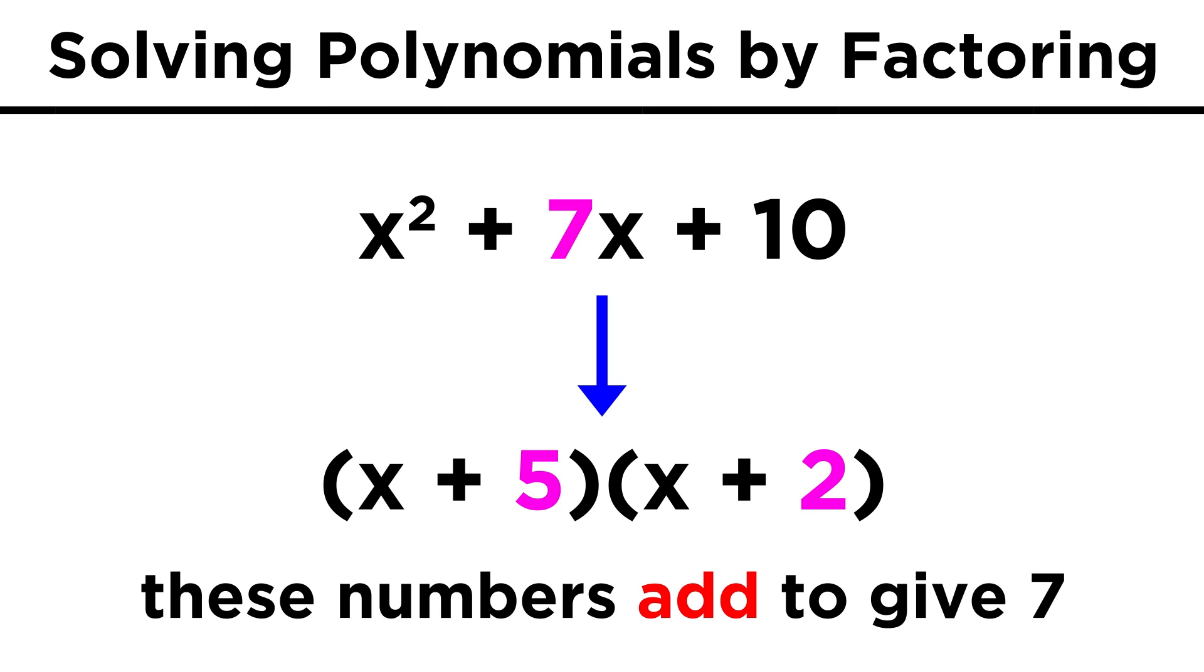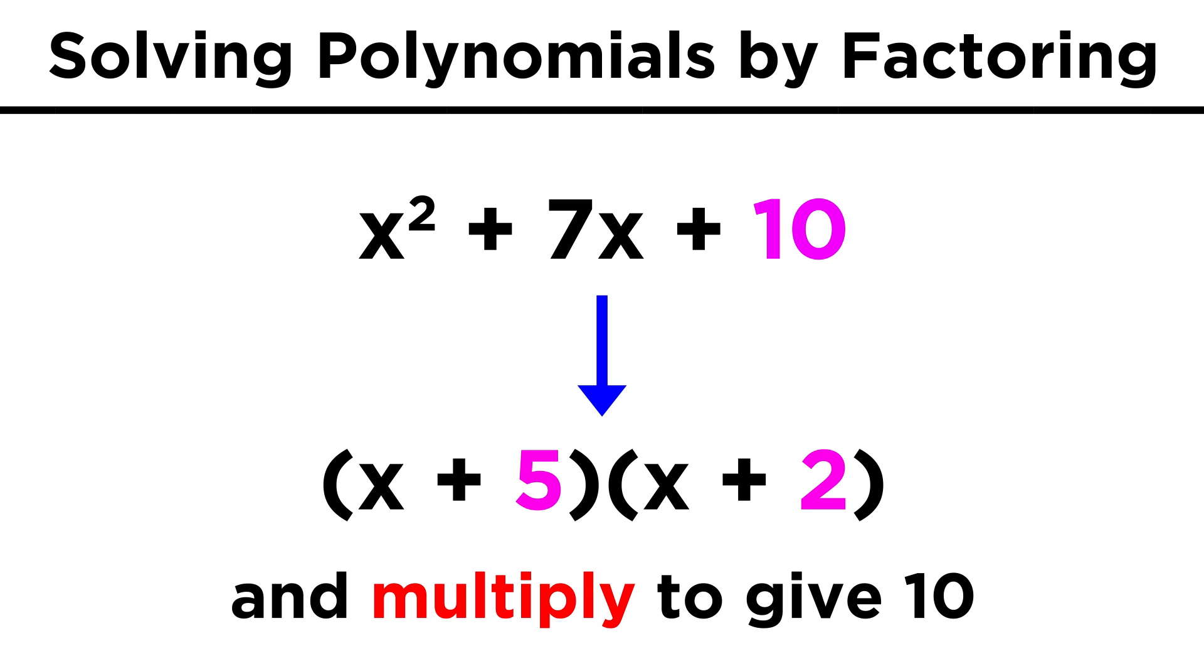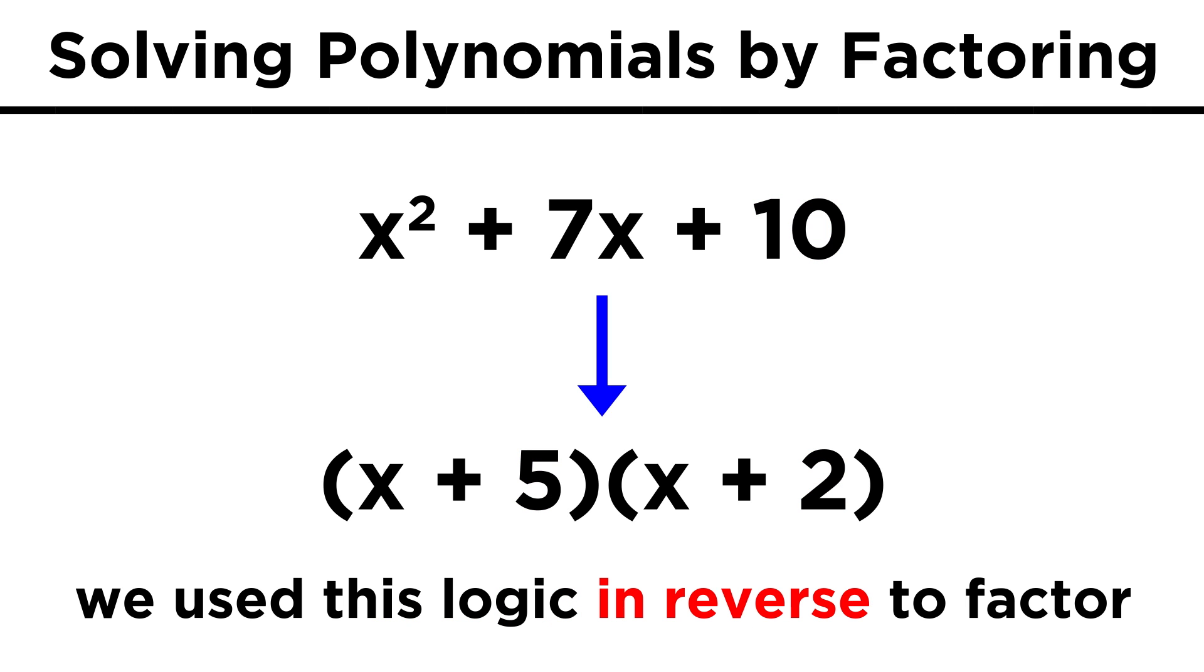Notice that we add five and two to get the coefficient of 7x, and we multiply five and two to get ten, which is precisely what we were doing in reverse, by selecting five and two.